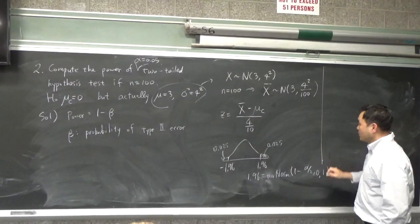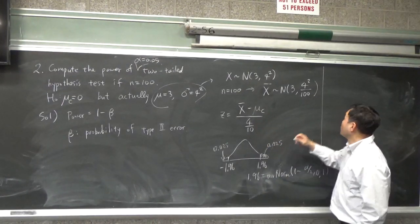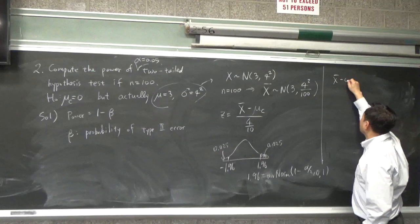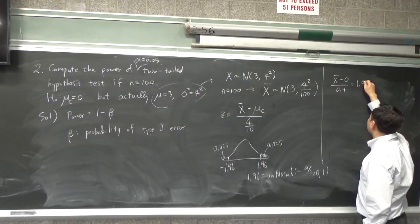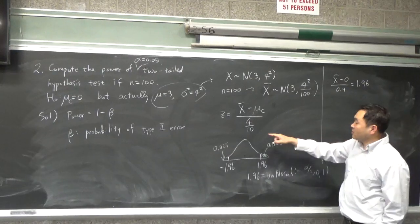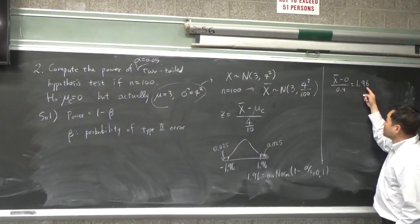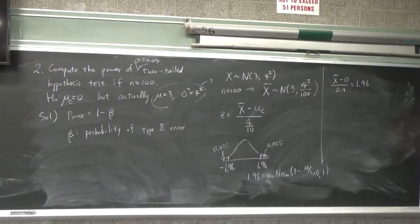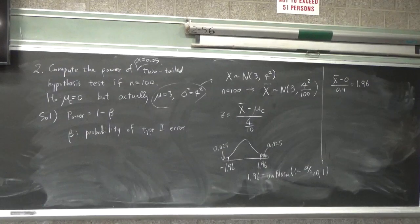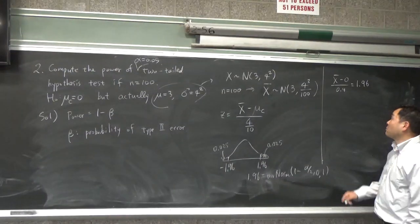So this means that since this is 0 and this is 0.4, we have x bar minus 0 over 0.4 equals to 1.96. If it's less than or equal to 1.96, or this is bigger equal to negative 1.96, then you can't reject the null and you end up with a type 2 error.